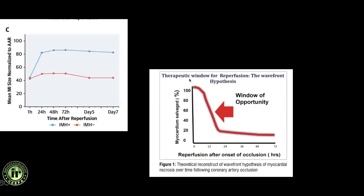There is also a therapeutic window for reperfusion. Once a patient develops myocardial infarction, reperfusion must be performed within 12 hours. Anything beyond 12 to 24 hours shows significantly reduced myocardial salvage. More than 24 hours, there is no scope for pharmacological or interventional reperfusion. The mean MI size normalized to area at risk is significantly different for infarctions with versus without intramyocardial hemorrhage.